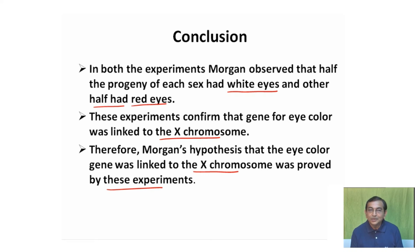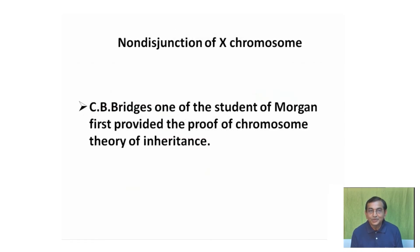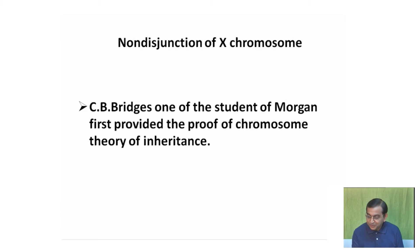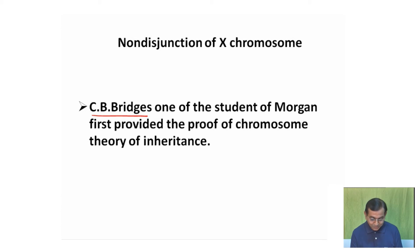The chromosome theory of inheritance was further proved by the non-disjunction of the X chromosome. This experiment was carried out by one of Morgan's students, Calvin B. Bridges, who performed one of the most important experiments on Drosophila.